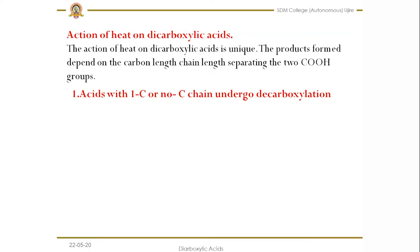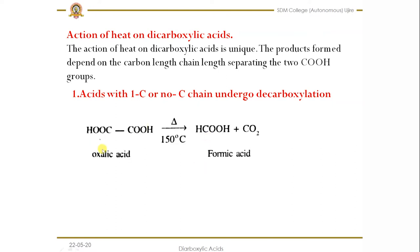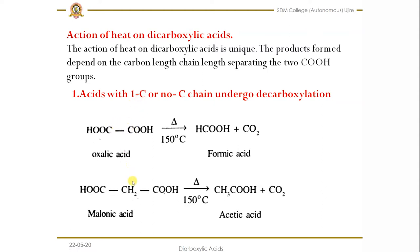First, acids with no carbon or one carbon in between the two carboxylic groups undergo decarboxylation. For example, oxalic acid has no carbon between the two carboxylic groups. If you have one carbon, the example is malonic acid, which undergoes decarboxylation. When heated at higher temperature, around 150 degree Celsius, by the removal of CO2, malonic acid gives acetic acid.